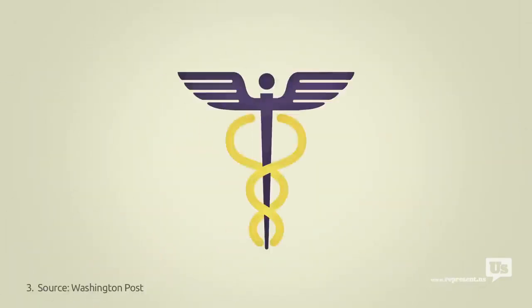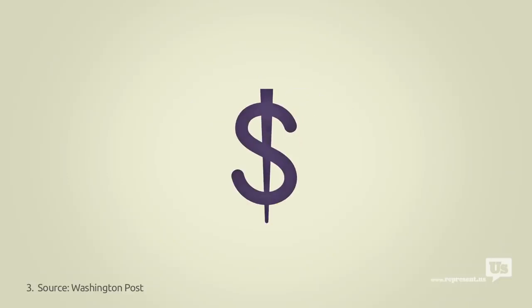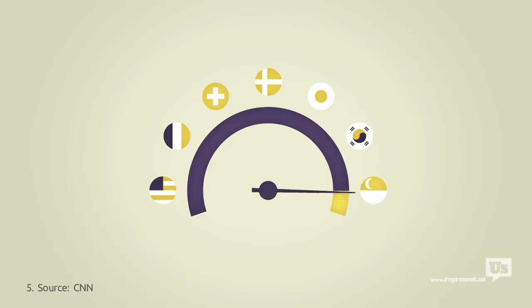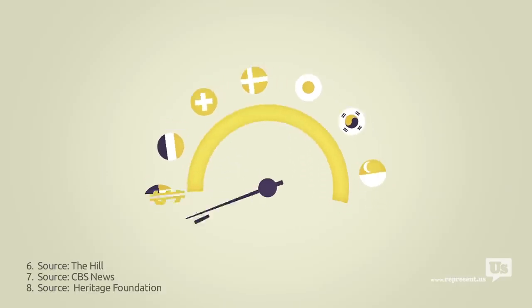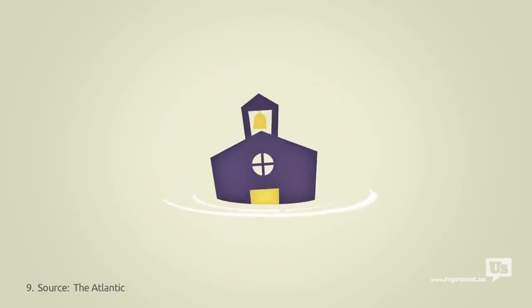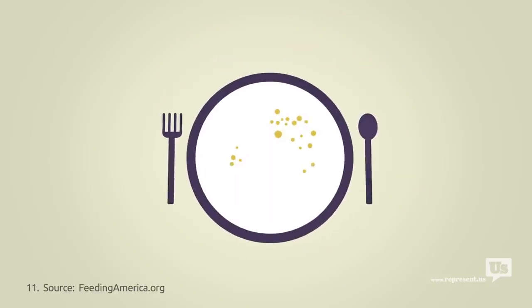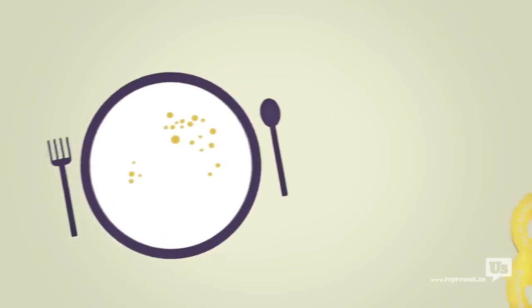We pay for it, with the most expensive healthcare in the world. We pay for it with a tax code that's a complete mess. We pay for it with internet that's slower and more expensive, with wasteful spending, a floundering education system, a catastrophic drug war, and one in five American children born into poverty. Almost every major issue we face as a nation can be traced back to this graph.